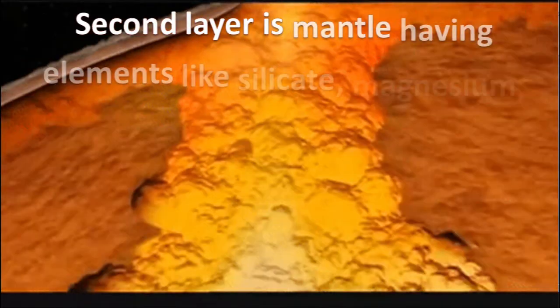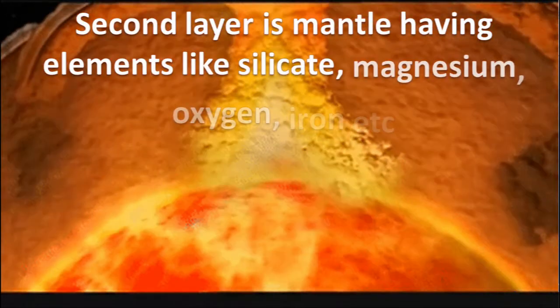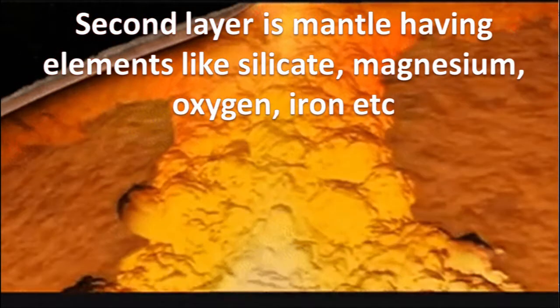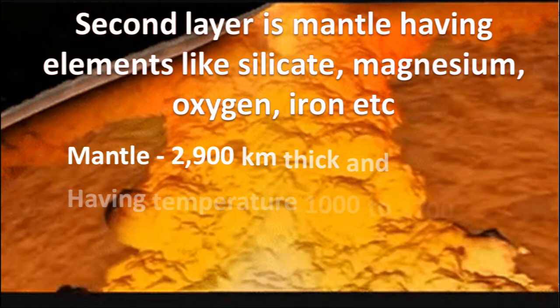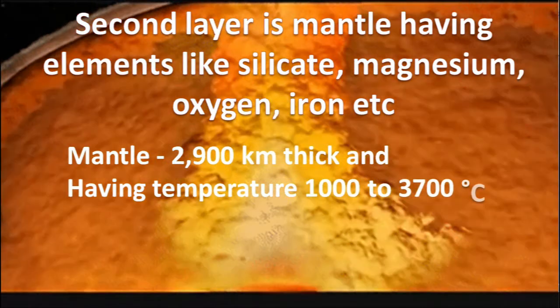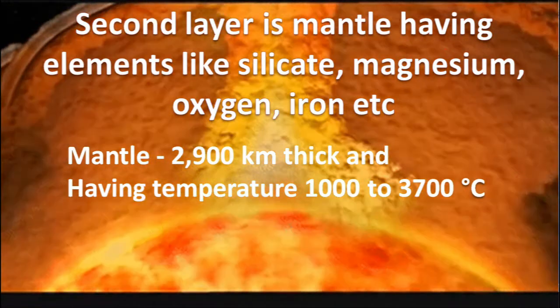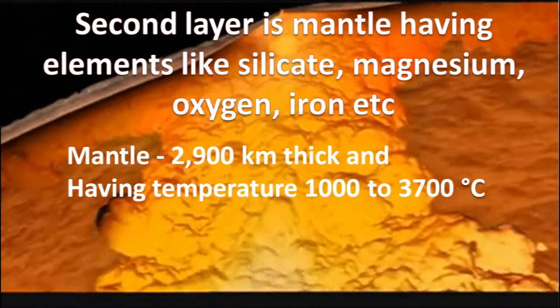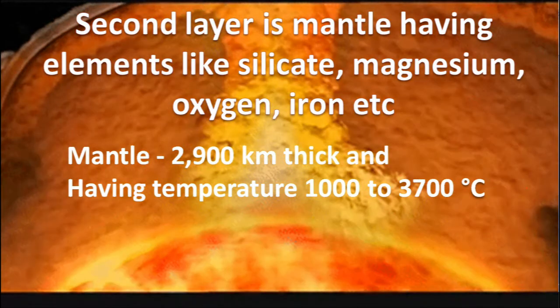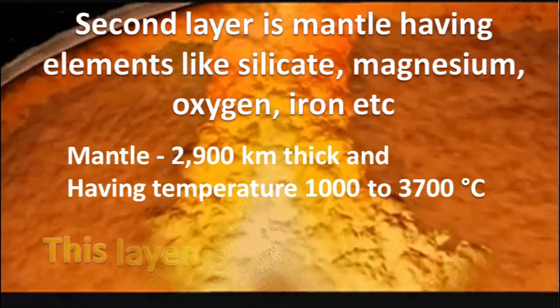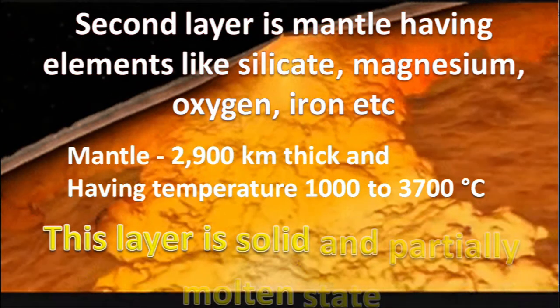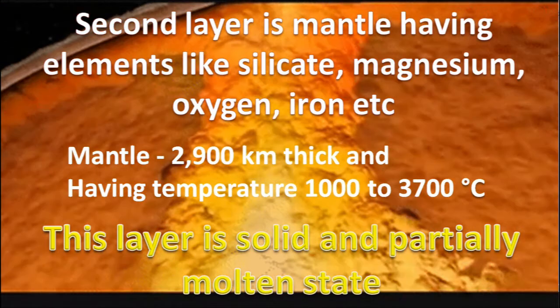Second layer is mantle, having elements like silicate, magnesium, oxygen, and iron. Mantle having thickness about 2,900 km and having temperature between 1,000 to 3,700 degrees Celsius. This layer is solid and partially molten state.